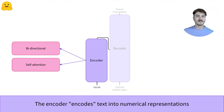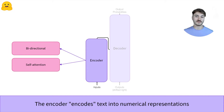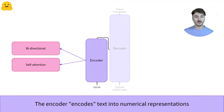The encoder accepts inputs that represent text. It converts these texts, these words, into numerical representations. These numerical representations can also be called embeddings or features. It uses the self-attention mechanism as its main component. We recommend you check out the video on encoders specifically to understand what this numerical representation is, as well as how it works. We'll study the self-attention mechanism in more detail, as well as its bidirectional properties.